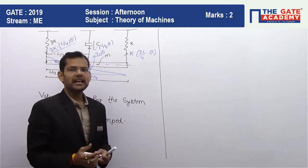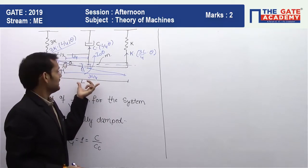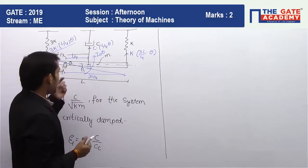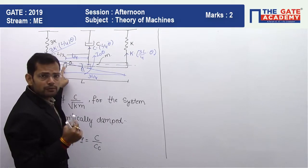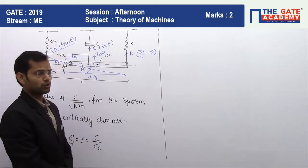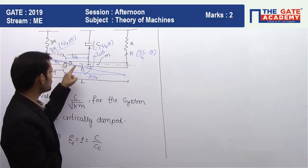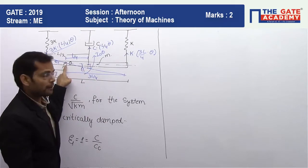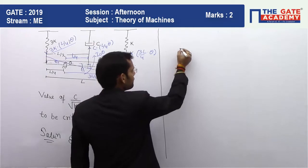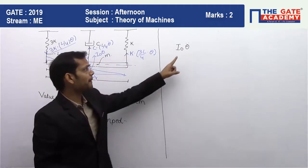To write the equation of motion, we will apply D'Alembert's principle. For a system to be balanced, the summation of all forces and inertia forces should equal zero. Since the system is rotating, the summation of all moments and inertia couples about the point of rotation should also equal zero. Our rod rotates about point O, so we sum all couples about that point. The first term is the inertia couple, which is I-naught times theta double dot — the mass moment of inertia of the rod about the point of rotation.